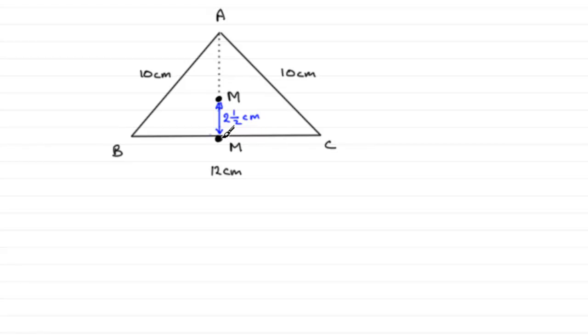We're also told then that we have a mass m attached to this edge BC. And when this triangle is suspended from B, what angle does the edge BC make with the vertical?